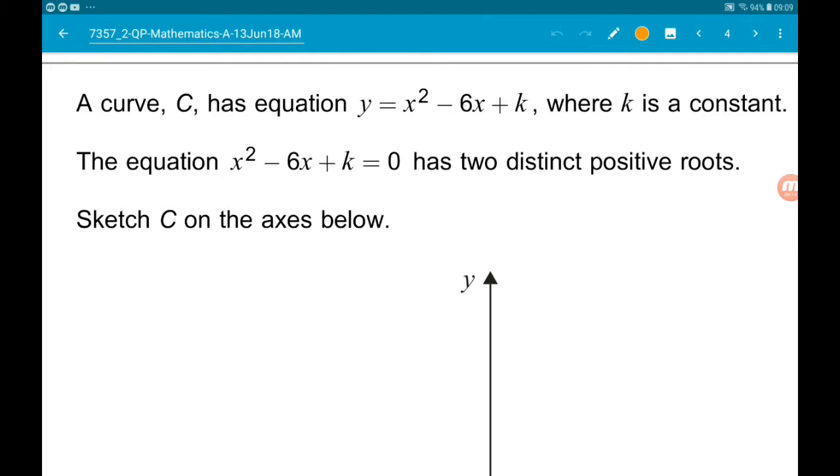The equation x squared minus 6x add k equals zero has two distinct positive roots. Sketch C on the axes below.